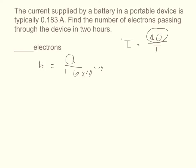So to solve for Q we take I times T. We can replace Q here with I times T. So the number of electrons is equal to I times T over 1.6 times 10 to the negative 19th.